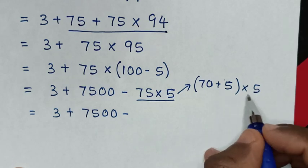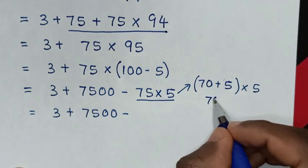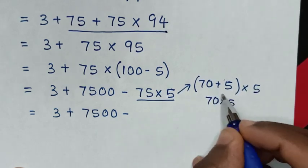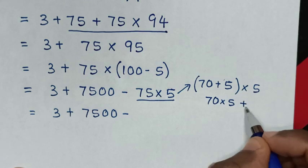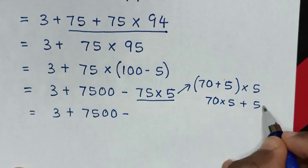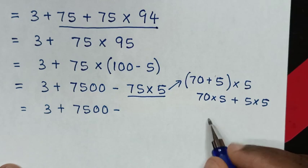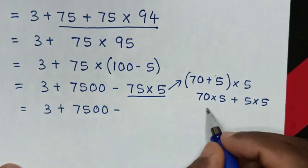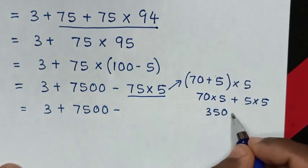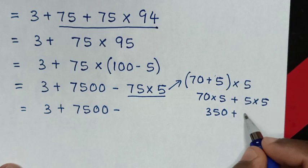Then, this times this: 70 times 5, then plus 5 times 5. So 70 times 5 is 350, plus 5 times 5 is 25.